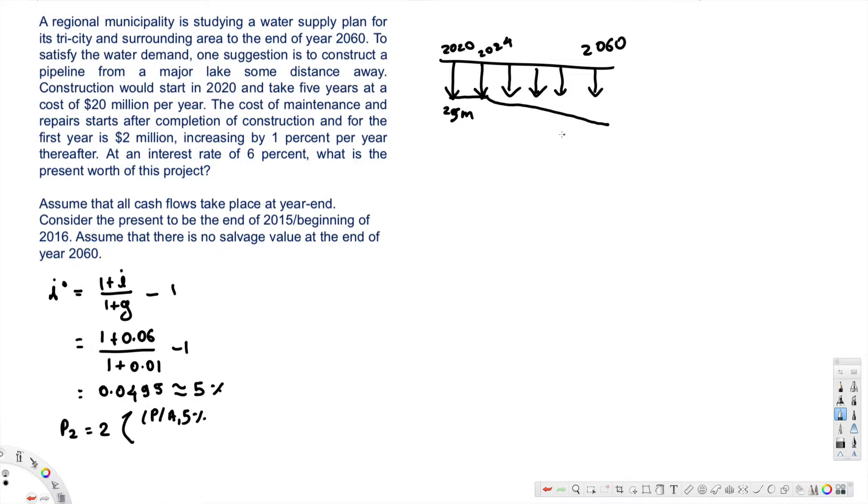So here after this we have 1% interest increase, and that is from 2024 to 2060, that's going to be 35 years.